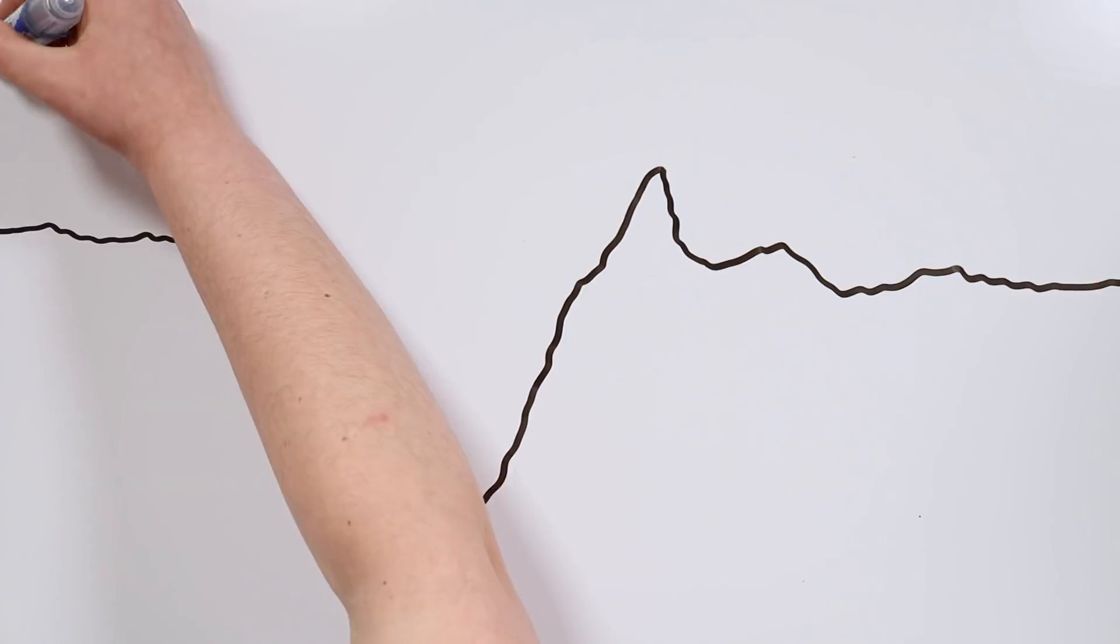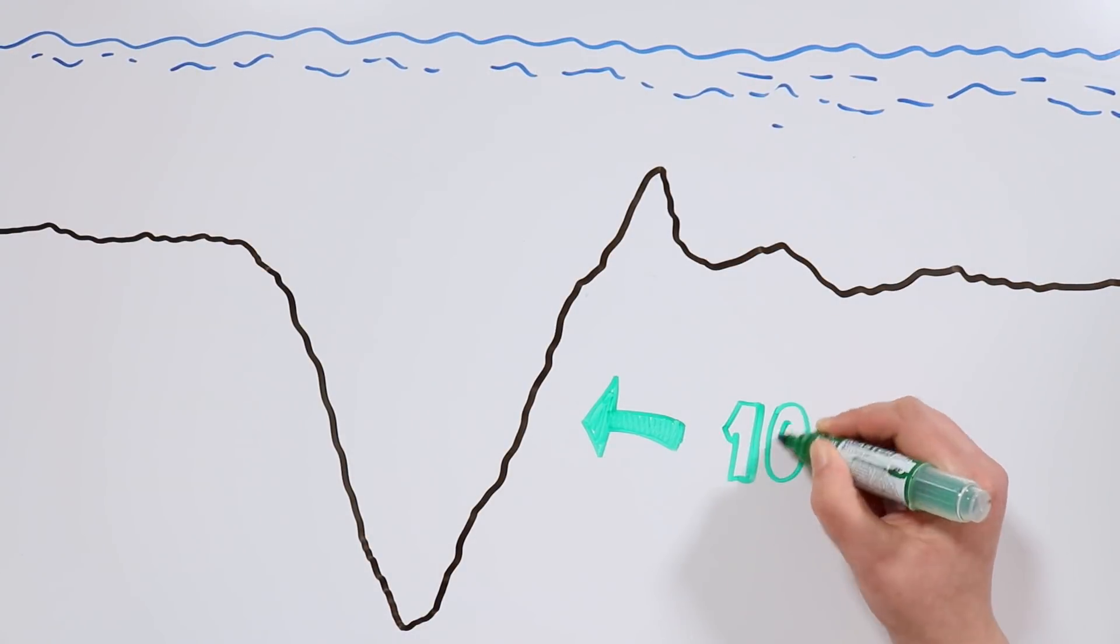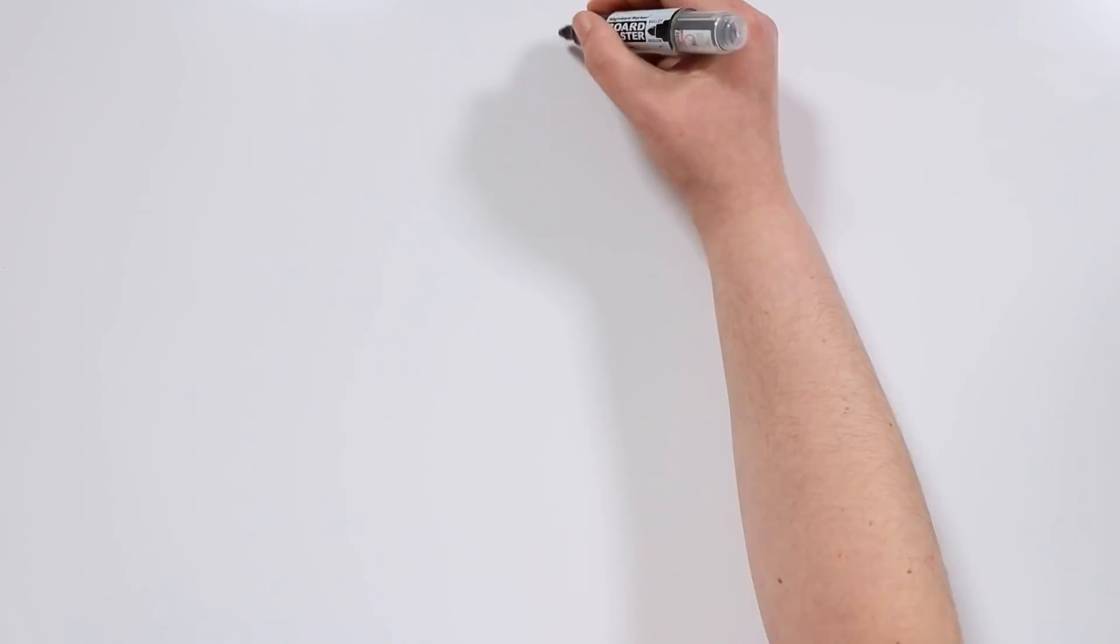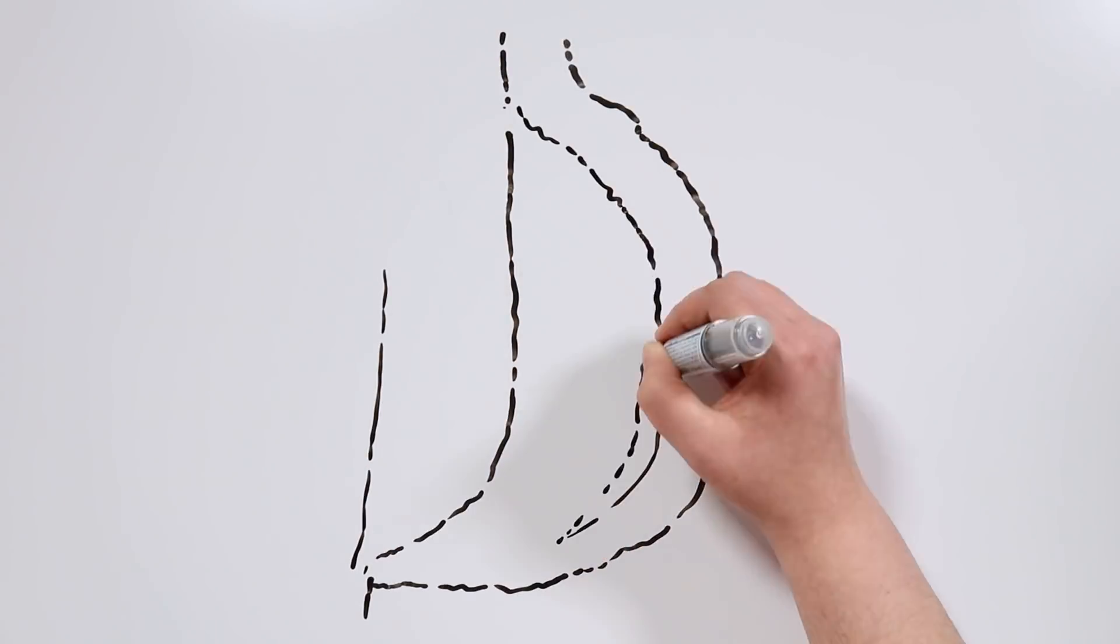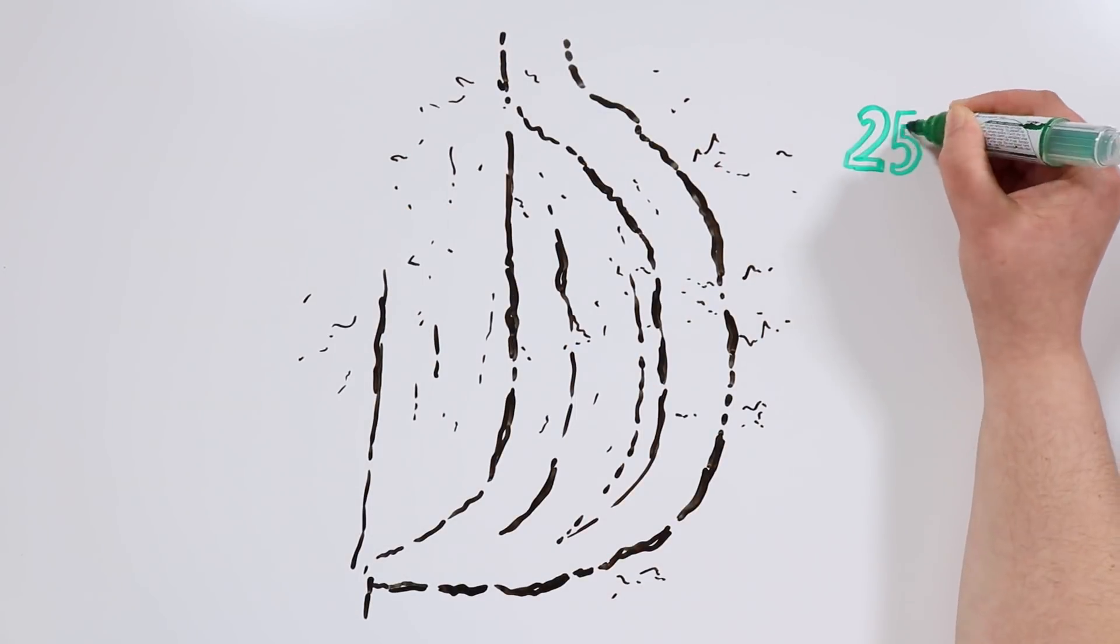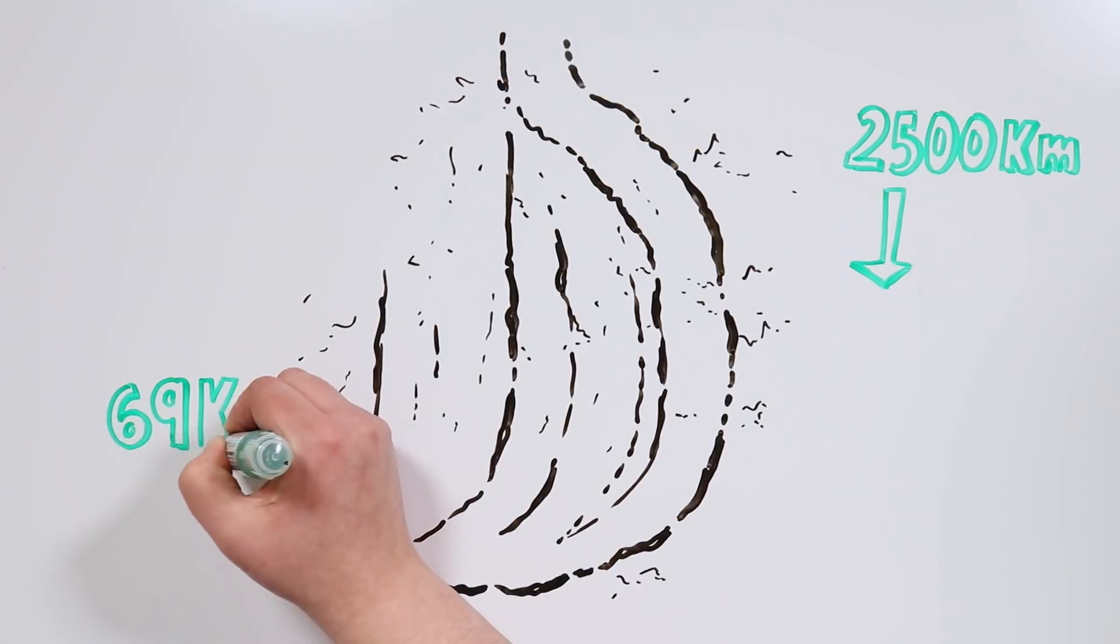As we mentioned before, the Mariana Trench is the deepest undersea trench in the whole planet, reaching 10 kilometers and 911 meters in depth. And just so you get an idea, the average sea depth is of 4 kilometers. The trench is crescent-shaped with more than 2,500 kilometers in length and just 69 kilometers in width.